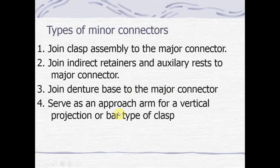There are four types of minor connectors. First, to join the clasp assembly to the major connector. Second, to join the indirect retainers and auxiliary rest to the major connector. Third, to join the denture base to the major connector. And fourth, the minor connector which serves as an approach arm for a vertical projection or bar type of clasp.